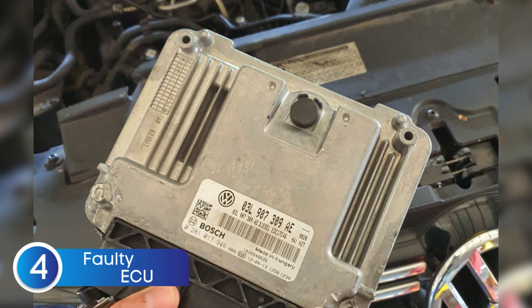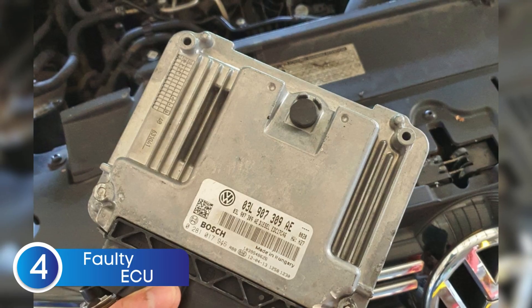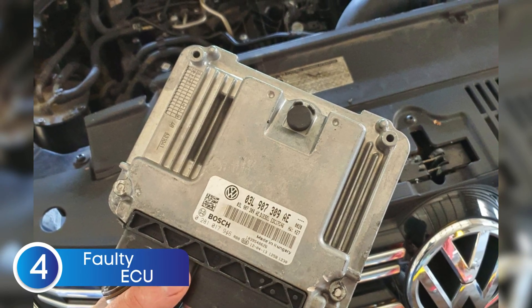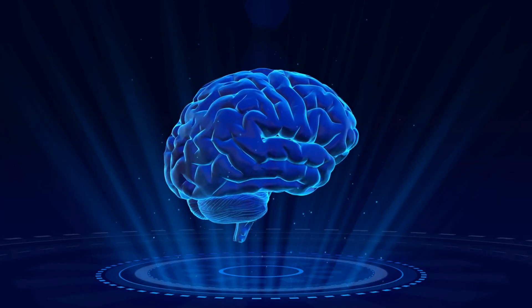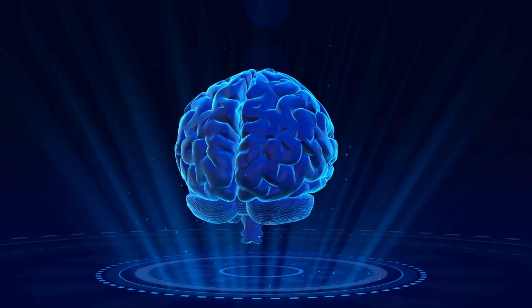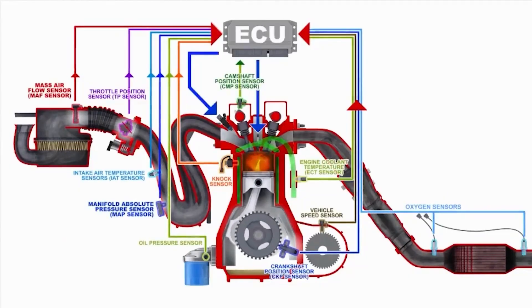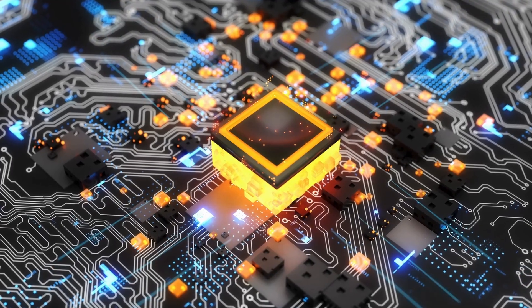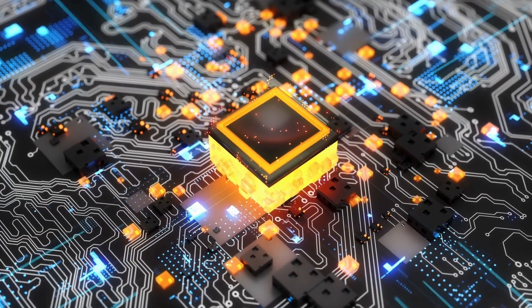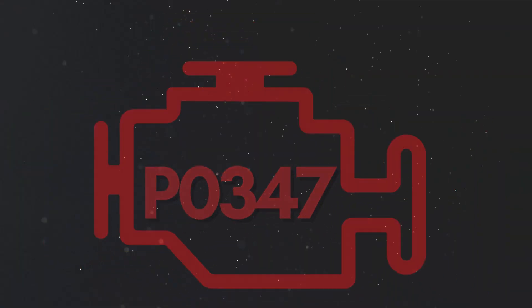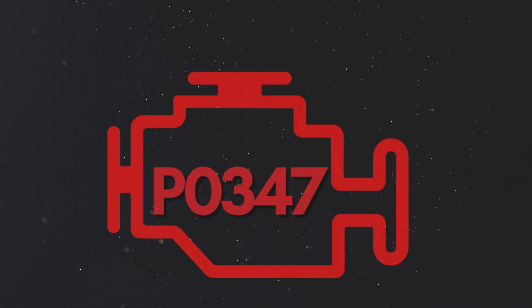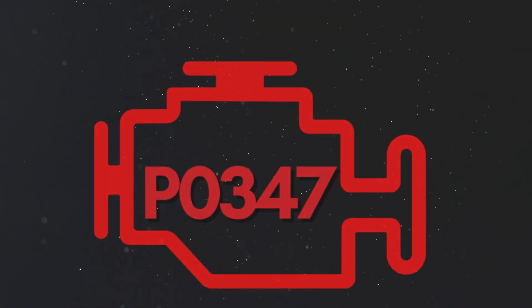The fourth cause is ECU failure or software issues. The ECU, basically the brain of your engine, relies on data from multiple sensors, including the camshaft position sensor, to manage engine timing and fuel injection. While it's rare, the ECU itself can sometimes develop internal faults or software glitches. When that happens, it might misread or misinterpret the signals coming from the camshaft sensor, triggering the P0347 code even if the sensor and wiring are just fine.